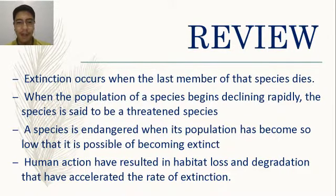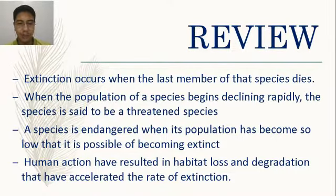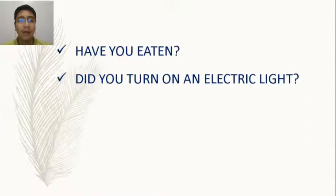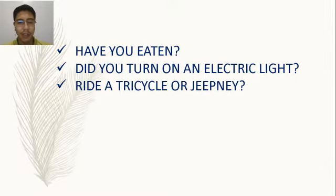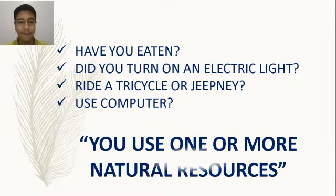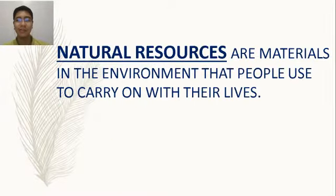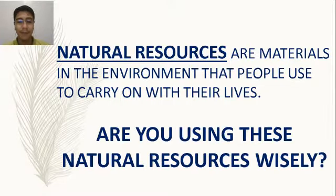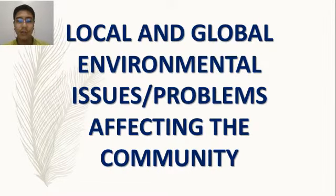A species becomes endangered when its population number gets so low that it is on the brink of extinction. Human actions have resulted in habitat loss and degradation that has accelerated the rate of extinction. Did you turn on an electric light, ride a tricycle or jeepney, or use a computer? You used one or more natural resources — materials in the environment that people use to carry on with their lives.